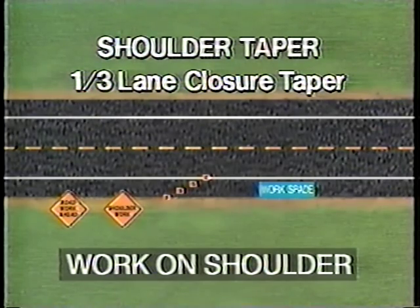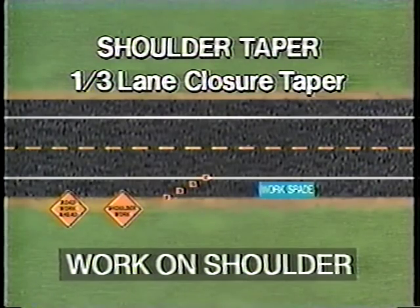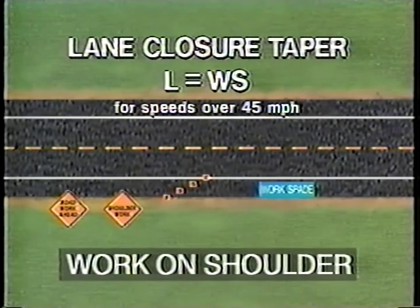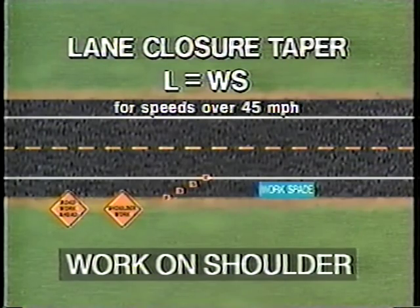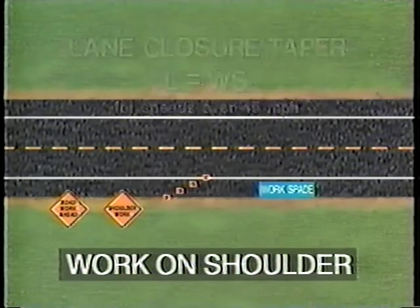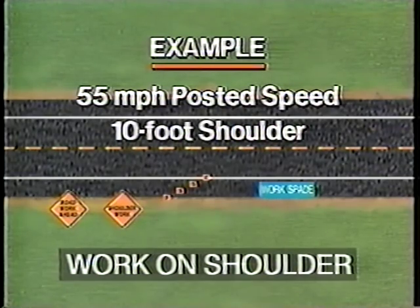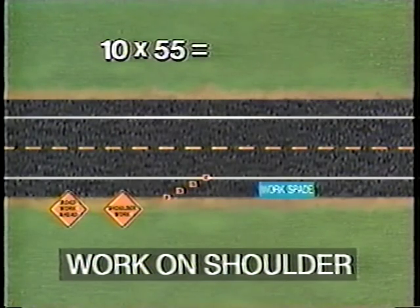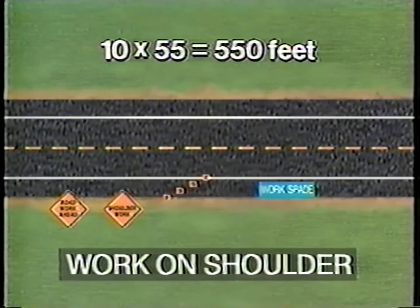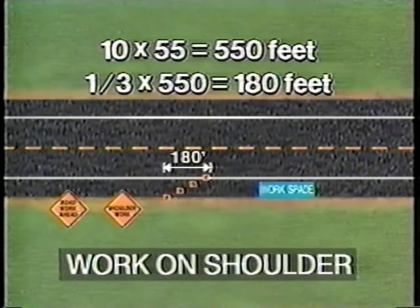The length of the shoulder closure taper should be one third of the lane closure taper length, using the shoulder width in the formula instead of lane width. The lane closure taper length is the product of the lane width and posted speed limit for speeds over 45 miles per hour. Assuming a 55 mph posted speed and a 10-foot shoulder, the lane closure taper would be 10 times 55, or 550 feet. The shoulder closure taper is therefore one third of this, or approximately 180 feet.